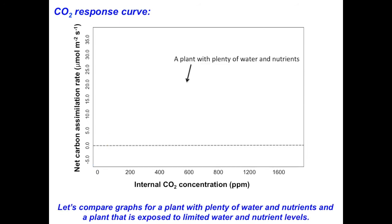Let's make a comparison. Imagine a plant that has been grown with plenty of water and plenty of nutrients — I would expect its CO2 response curve to show a nice steep linear portion that tapers off to a high maximum. Now, take a moment to press pause and draw the curve you would expect for a plant grown in an environment low on water and low on nutrients, and compare it to the happy plant's curve shown here.